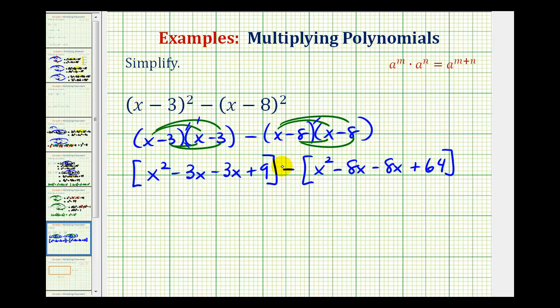Now the reason we need these brackets is we have to subtract this entire polynomial. But before we do that, let's combine our like terms. Here we have two x terms and here we have two x terms. So we have x squared. This would be minus six x plus nine.